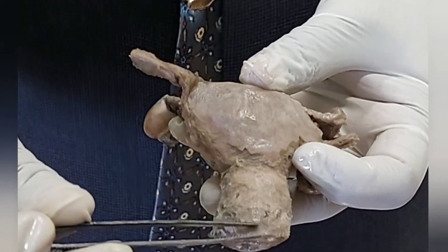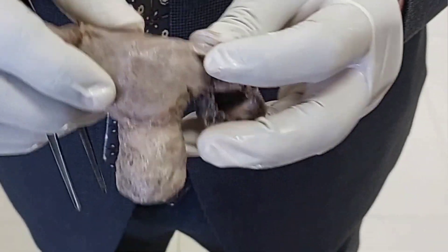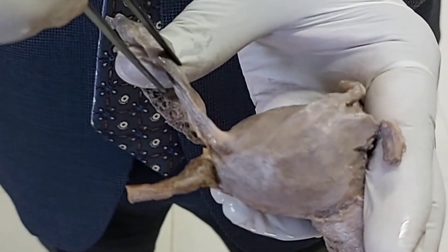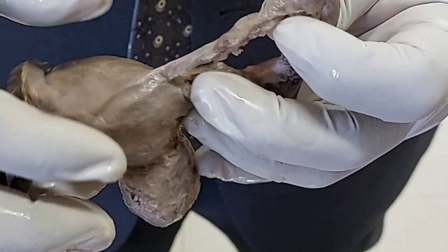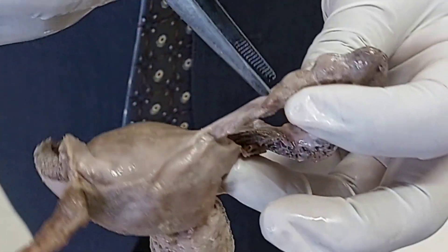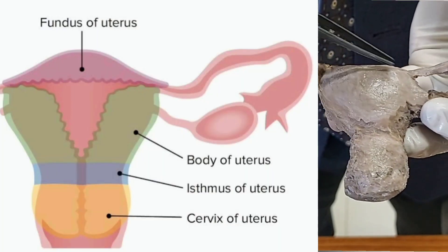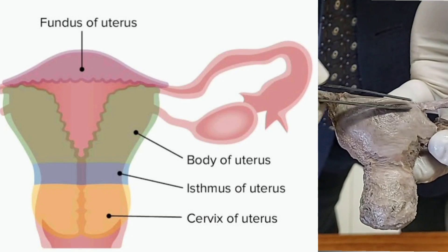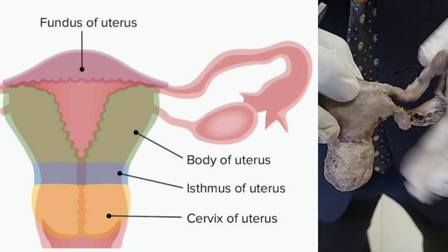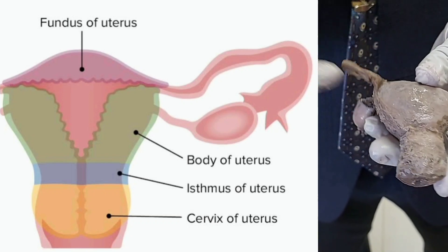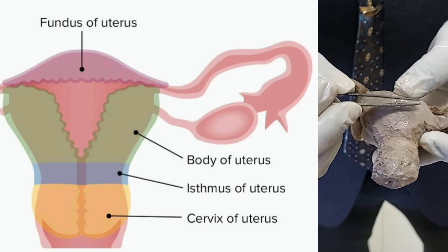In other words, 7.5 centimeters, then 5 centimeters, then 2.5 centimeters. The fundus is the part above the line joining the two openings of the fallopian tubes on both sides. That part is solid and covered by peritoneum on all sides. Below that is the body, and inside the body you will get the cavity called the uterine cavity.